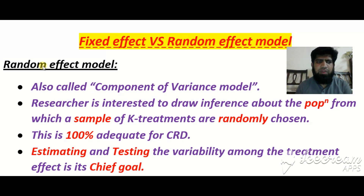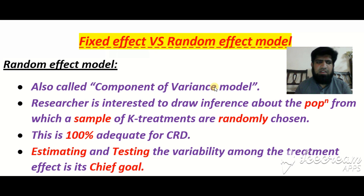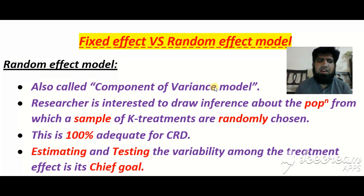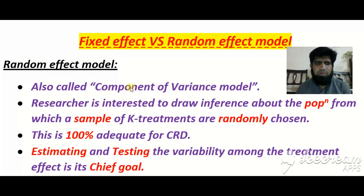Random effect model کے بارے میں پڑھتے ہیں۔ It is also called Component of Variance model. جس طرح fixed effect model کو Analysis of Variance model کہتے ہیں، اسی طرح random effect model کو Component of Variance model کا نام دیتے ہیں۔ Random effect model میں researcher is interested to draw conclusions about the population۔